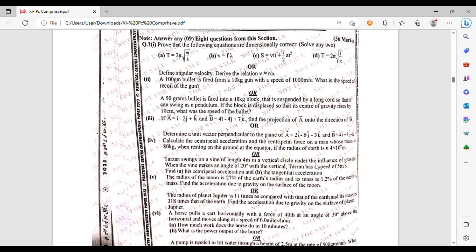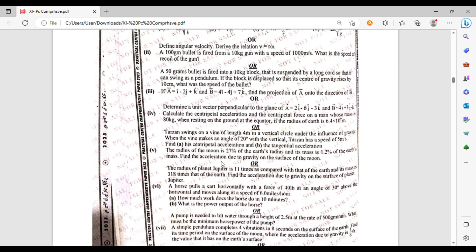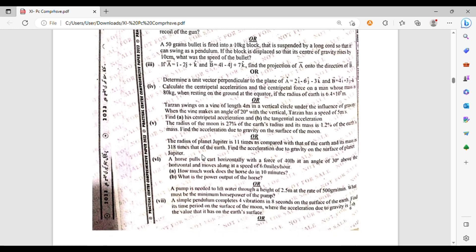Question number 4: calculate centripetal acceleration and centripetal force of a man whose mass is 80 kg when resting on the ground at the equator, if the radius of the earth is 6.4 times 10 to the power 6 meter. Or a man swings on a vine of length 4 meter in a vertical circle under the influence of gravity. When the vine makes an angle of 20 degrees with the vertical and has a speed of 5 meter per second, find the tension and the tangential acceleration. Question number 5: the radius of the moon is 27 percent of the earth's radius and its mass is 1.2 percent of the earth's mass. Find the acceleration due to gravity on the surface of the moon. Or the radius of the planet Jupiter is 11 times that of the earth and its mass is 318 times that of earth. Find the acceleration due to gravity on the surface of planet Jupiter.